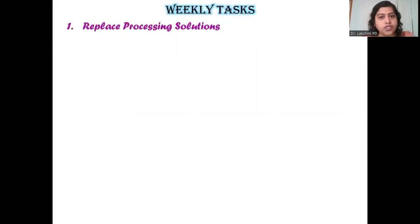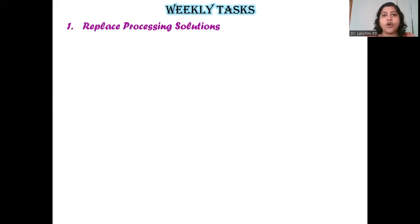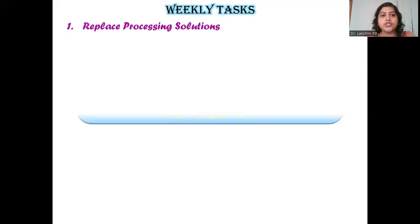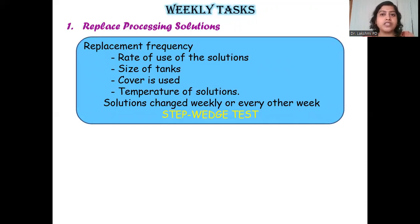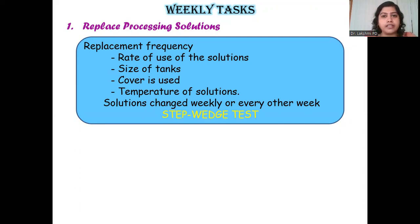Moving on to your weekly tasks. The first is replacing your processing solutions. Check the levels every single day, and replace on that particular day when needed. Otherwise, ideally at the end of two weeks it is always recommended to change your processing solutions, as they become depleted by oxidation or overuse. The replacement frequency is determined by the rate of use: in a facility with only five to six radiographs per day, two weeks or slightly more may be sufficient; but if 100 to 150 radiographs are processed daily, the replacement frequency would be much shorter — perhaps one week or every five days.